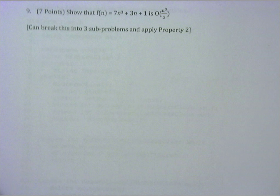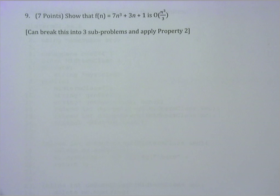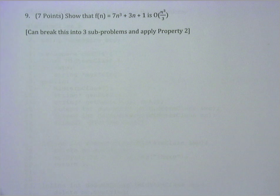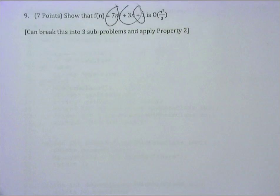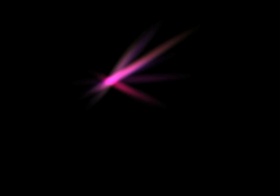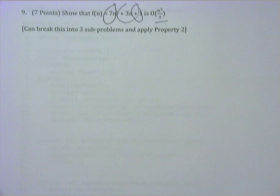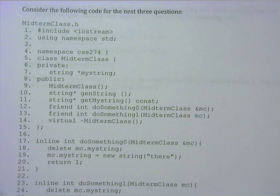Question number nine was to prove that 7N cubed plus 3N plus 1 is big O of N cubed over 3. This is a fairly straightforward problem. You just break it down into the three different parts of the expression. Prove that each one of them is big O of N cubed over 3, and then apply property two. I'm not gonna do the problem here.